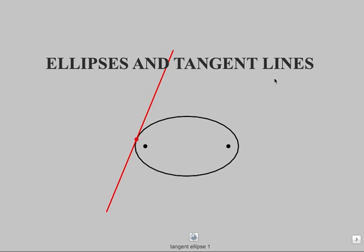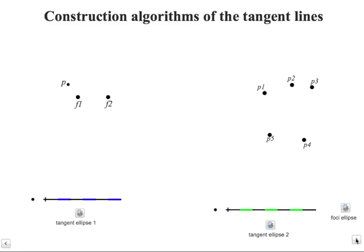You will see that I will be helped in this work by lots of macros I will create, especially for this work. Let us start by the macros allowing to construct tangent lines to ellipses when the ellipse is given by two foci and a point or when the ellipse is given by five points.